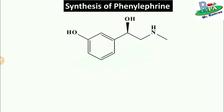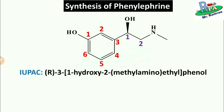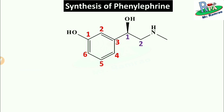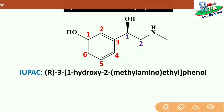Let's see how to give the IUPAC name. First give the numbering 1, 2, 3, 4, 5, 6 to the benzene ring, starting from the carbon where the hydroxyl group is attached. Then give numbering to the side chain as 1 and 2, starting from the hydroxyl group again. The R in the name refers to the stereochemistry of the stereocenter or asymmetric center or chiral center at carbon number 1 in the side chain.